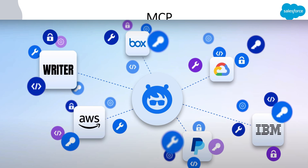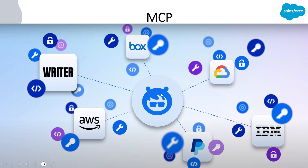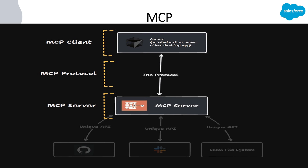It is very difficult to understand MCP through theory alone, so we should see it practically. But before that, let's look at the different parts of MCP. First, you have a MCP host, where your AI agent runs — for example, Cursor's AI assistant, GitHub Copilot's AI assistant, or Salesforce AgentForce AI agent. They use an MCP client to talk to the MCP server through the MCP protocol — that is the protocol the client uses to talk to the server. These servers are then connected to different applications and the tools they offer.